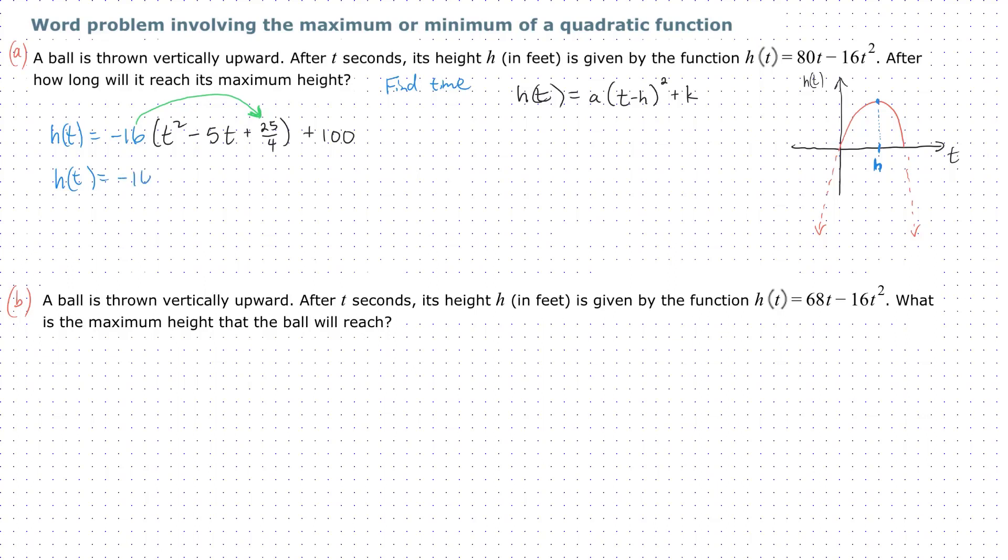Now h(t) is the correct function. h(t) = -16(t - 5/2)² + 100.